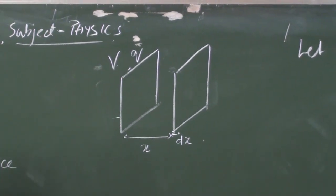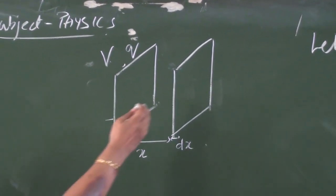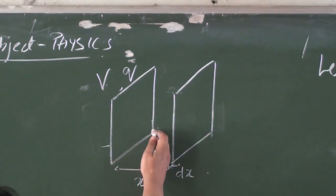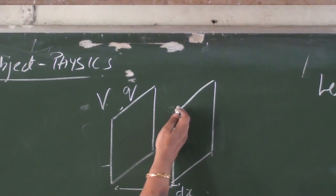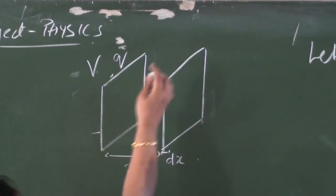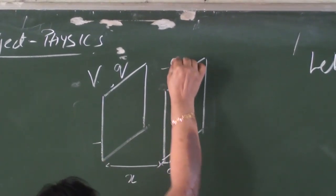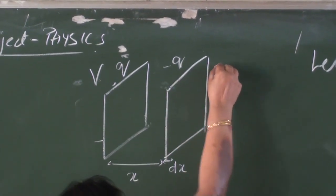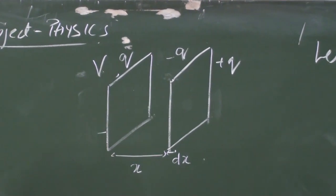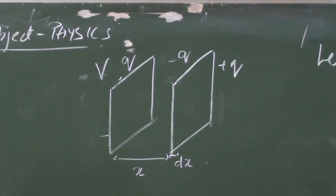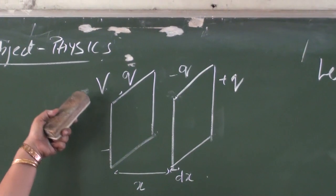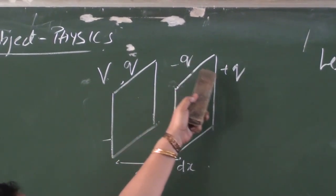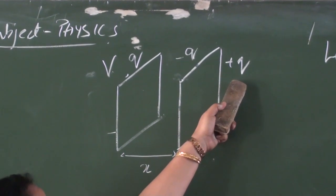What will happen? As soon as you place this uncharged conductor near the charged conductor, electrostatic induction will take place. The surface facing the charged conductor will acquire negatively induced charges, and the surface which is away will acquire positively induced charges. We are going to find how the potential of this conductor is affected due to the presence of these negative and positive induced charges.